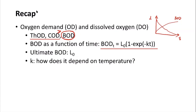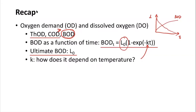This L0 is the ultimate BOD. We also discussed how this K value — the rate constant — depends on temperature. Basically, the higher the temperature, the larger the K, meaning faster decomposition. Further, if we know the rate constant at one temperature T1, we can use this equation to convert it into K2.